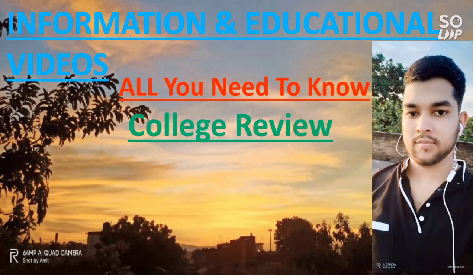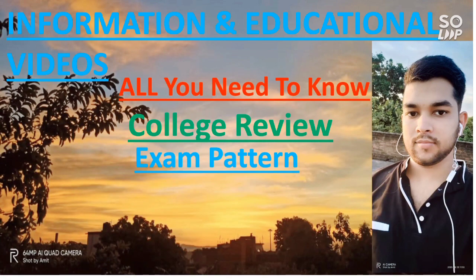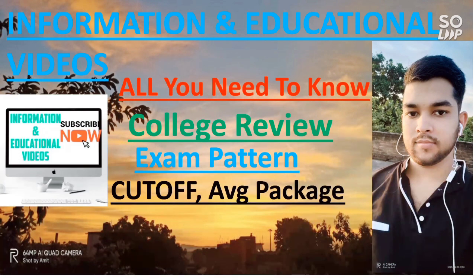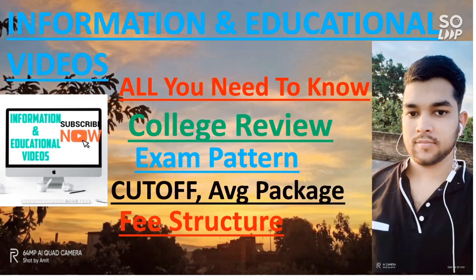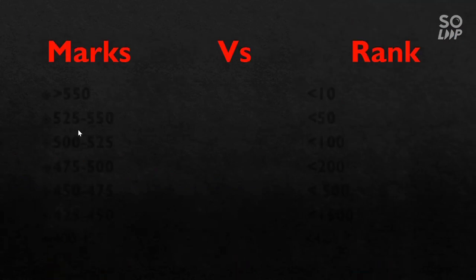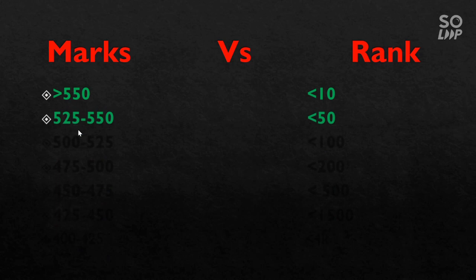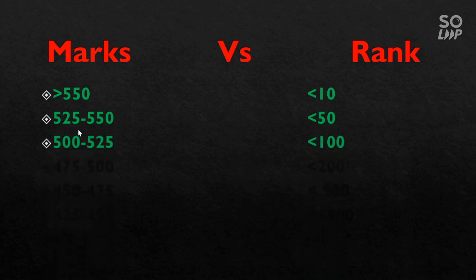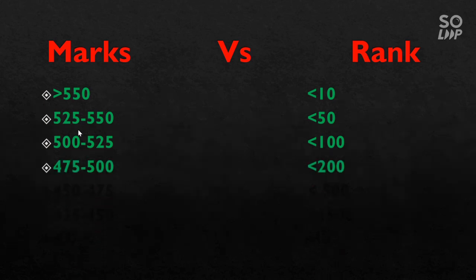For marks 550 to 525, your rank will be less than 10. For marks 550 to 550, your rank will be under 50. And for 500 to 525, your rank will be under 100.